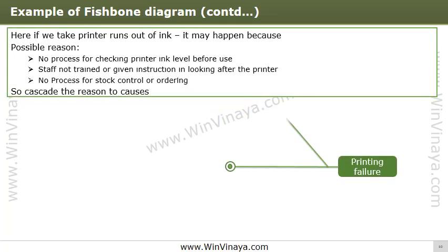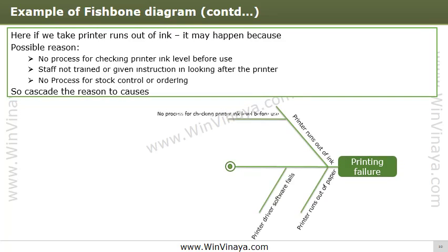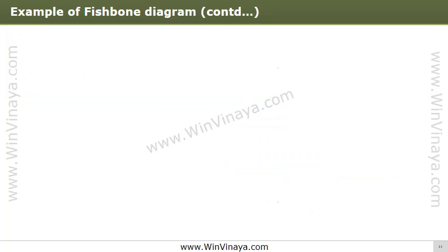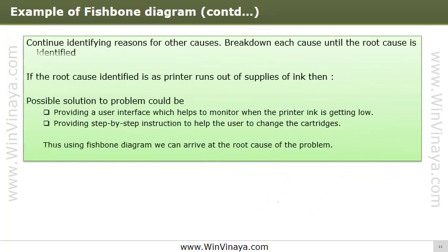For example, if we take 'printer runs out of ink,' it may happen due to: no process for checking printer ink level before use, staff not trained in looking after the printer ink, or no process for stock control or ordering. Finally, you should have a diagram showing all possible causes of the problem that you can think of.